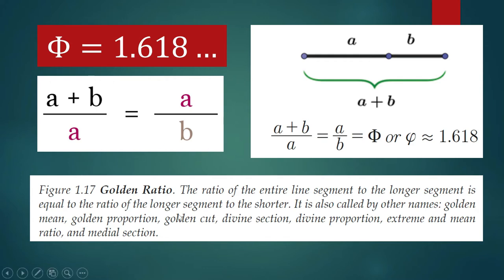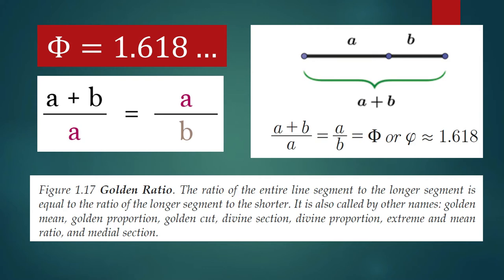According to Euclid, the golden ratio is defined as follows: it occurs when the ratio of the entire line segment to the longer segment A is equal to the ratio of the longer segment to the shorter segment. If those two ratios are equal, that ratio is what we call the golden ratio — also known as the golden mean, the golden proportion, or the divine section.